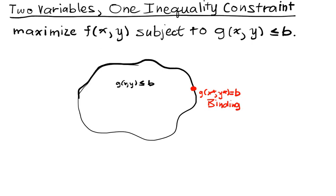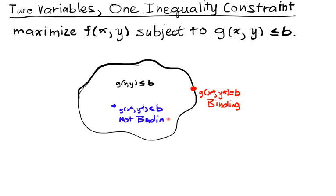The other kind of thing that can happen is your maximum actually occurs inside of this set, so here you'll have that g(x*, y*) is strictly less than b. And in this case, we'll call this not binding. There are a few other names, and you can read about those.